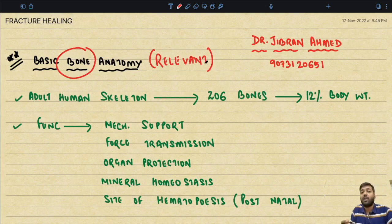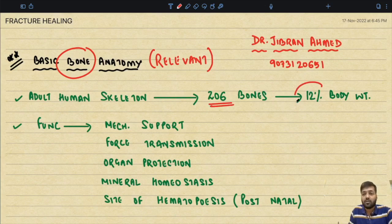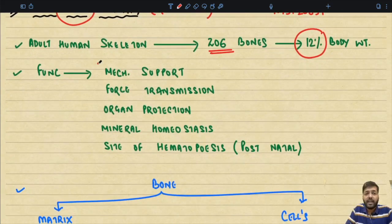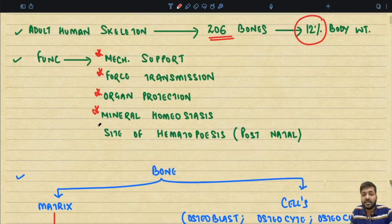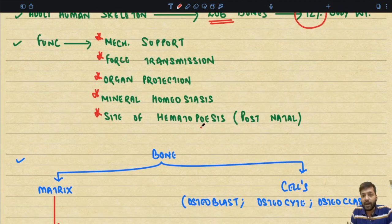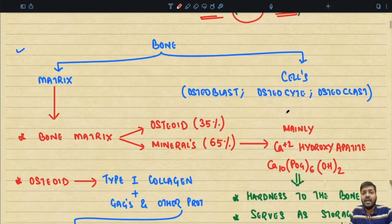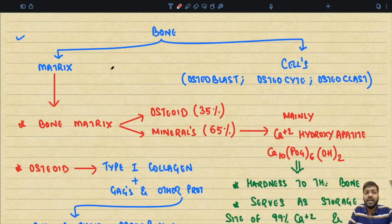The adult human skeleton comprises 206 bones, constituting 12% of body weight. The functions of bone include providing mechanical support, facilitating transmission of force, protecting internal organs, playing a very important role in mineral homeostasis — mainly calcium and phosphorus homeostasis — and it is the major site of hematopoiesis in postnatal life.